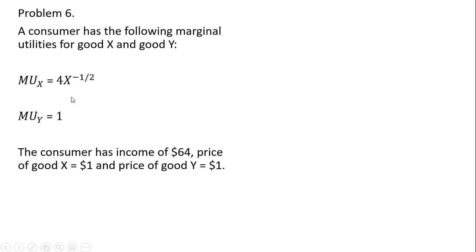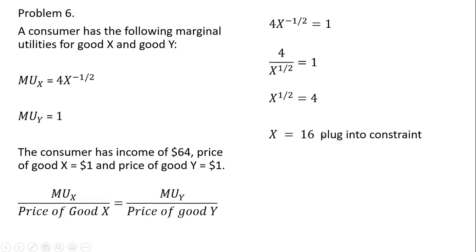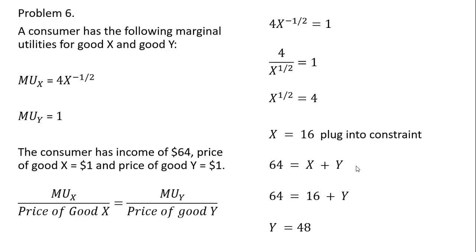Problem six is the same setup as problem five, but the consumer has more income of $64. Everything in the utility maximizing condition is the same, so x still equals 16. With the different budget constraint, y equals 48. It's interesting to note that as the consumer's income went up, they bought the same amount of good x as in problem five, so the income elasticity of demand for good x here is 0. That's it — I hope you found this video helpful.